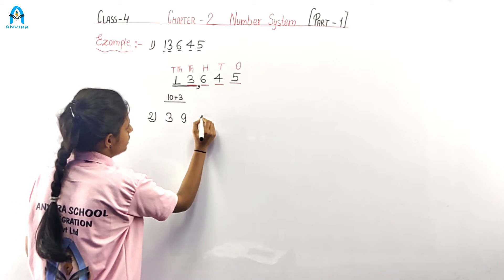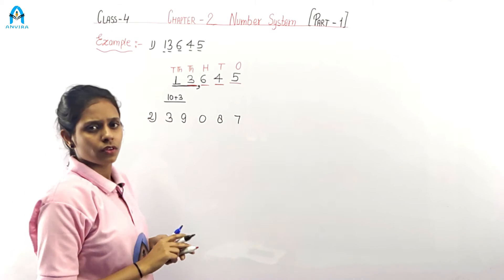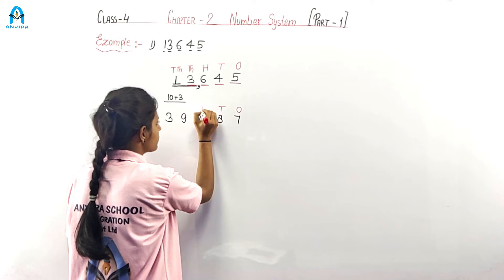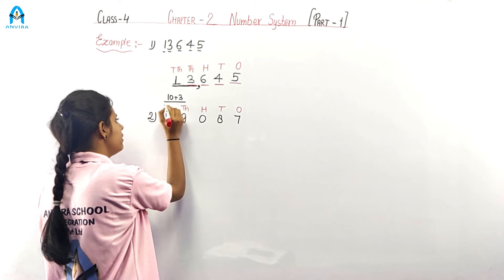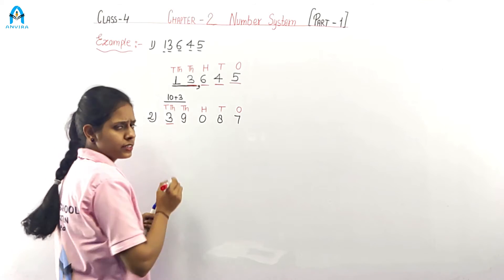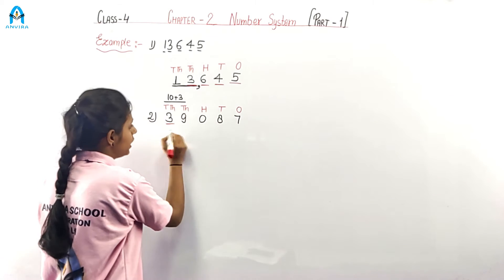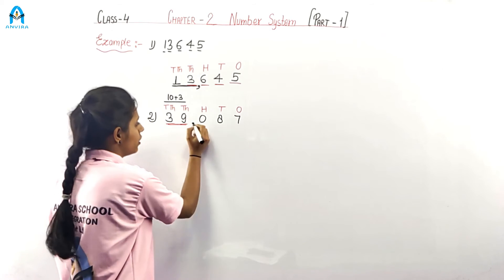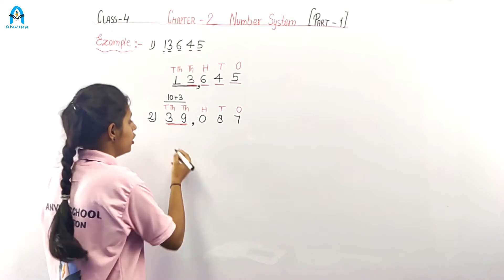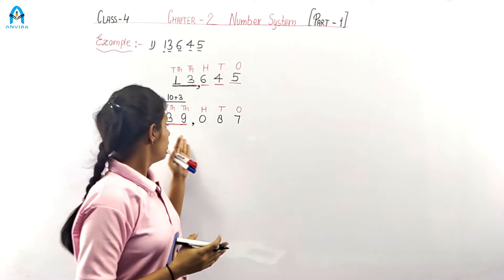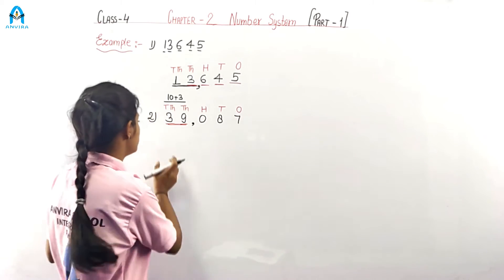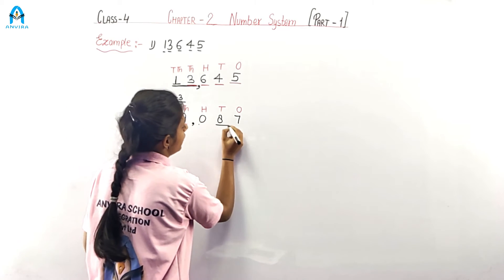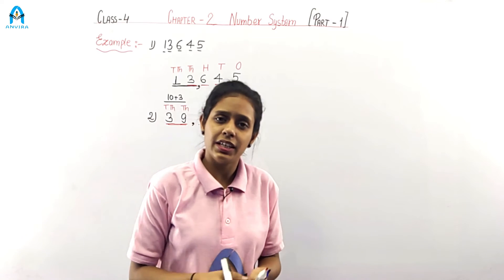Let's take one more example: 3, 9, 0, 8, 7. This is also a five-digit number. In the place chart: ones is 7, tens is 8, hundreds is 0, thousands is 9, ten thousands is 3. The ten thousands and thousands together make thirty-nine. We use a comma after thousands. So this is thirty-nine thousand, zero hundreds, eighty-seven — thirty-nine thousand eighty-seven.